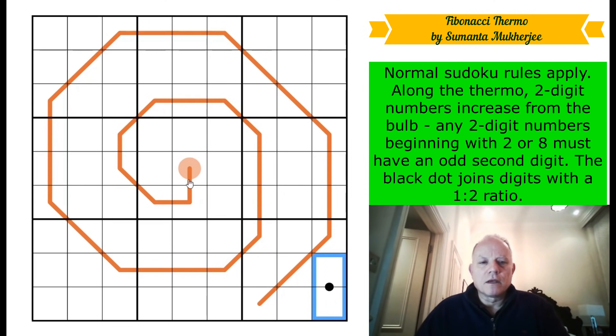So we've got normal Sudoku rules. But along the thermo, it's two-digit numbers. So that will be a two-digit number. It might be 15, like that. Then there'll be another two-digit number, which has to be bigger, then another one, all the way to the end of the thermo, increasing.